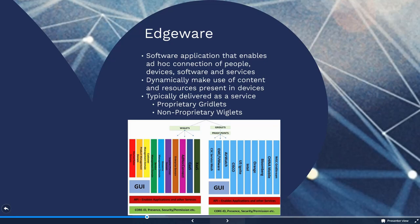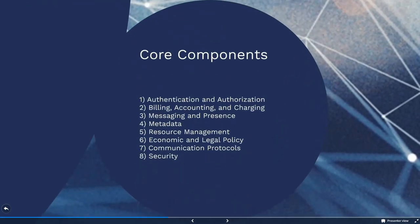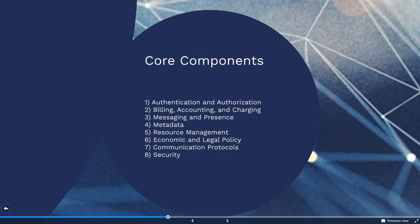Edgeware applications may enable different kinds of resource sharing and functionality. They are typically delivered as a service in the form of either gridlets, which are proprietary Edgeware applications, or wiglets, which are non-proprietary open applications. For a wireless grid to work, the grid core must be implemented on an intelligent machine with rights to control other edge resources. The core is extremely light and easy to embed on a wide range of different kinds of equipment. Users are allowed to share and manage digital resources through application of the architecture's eight core components.